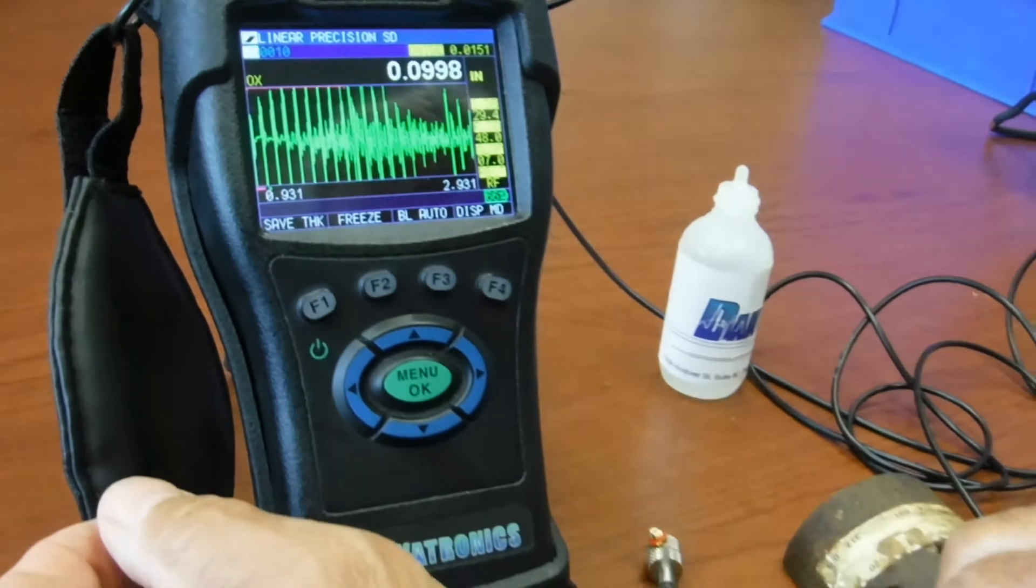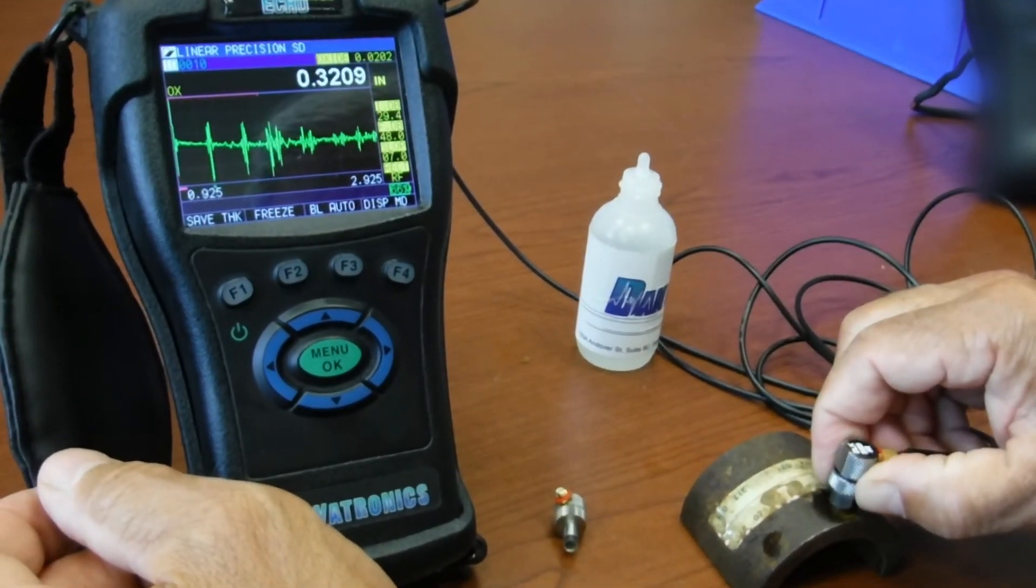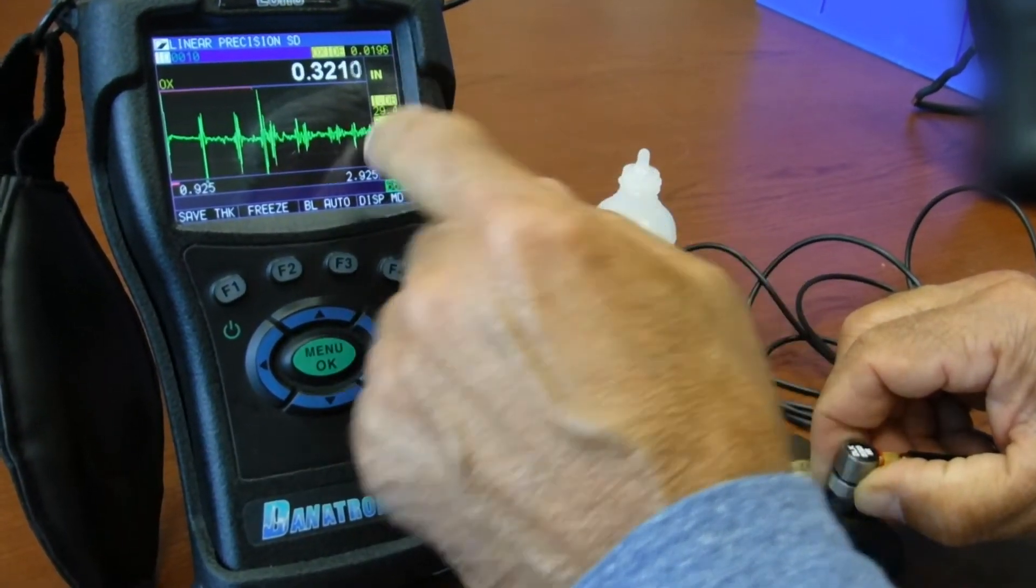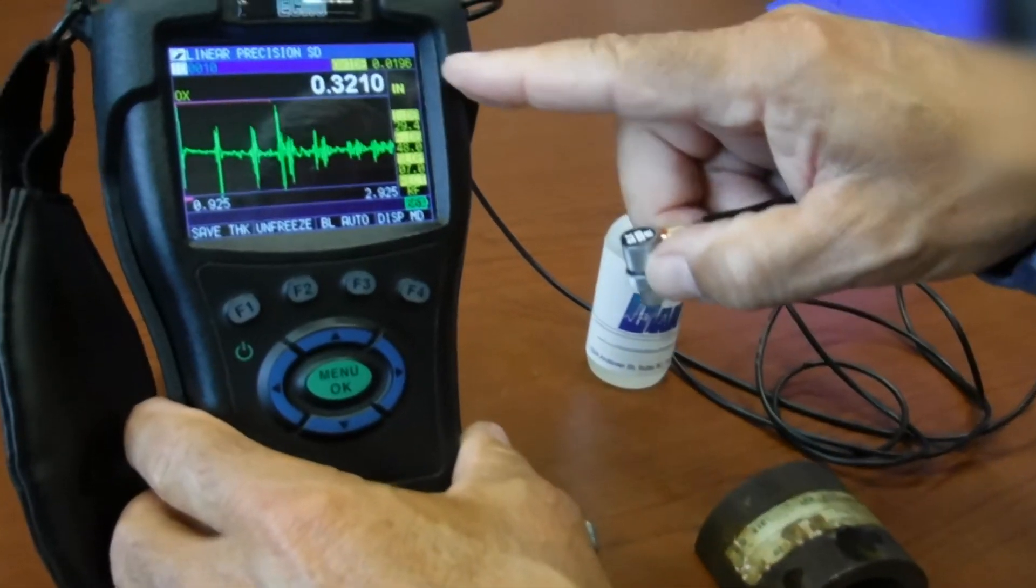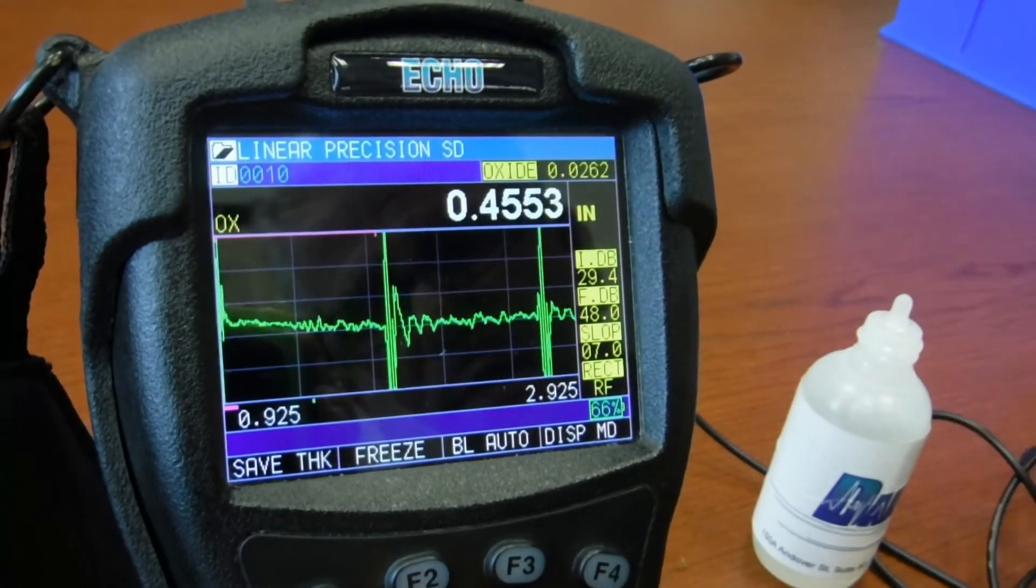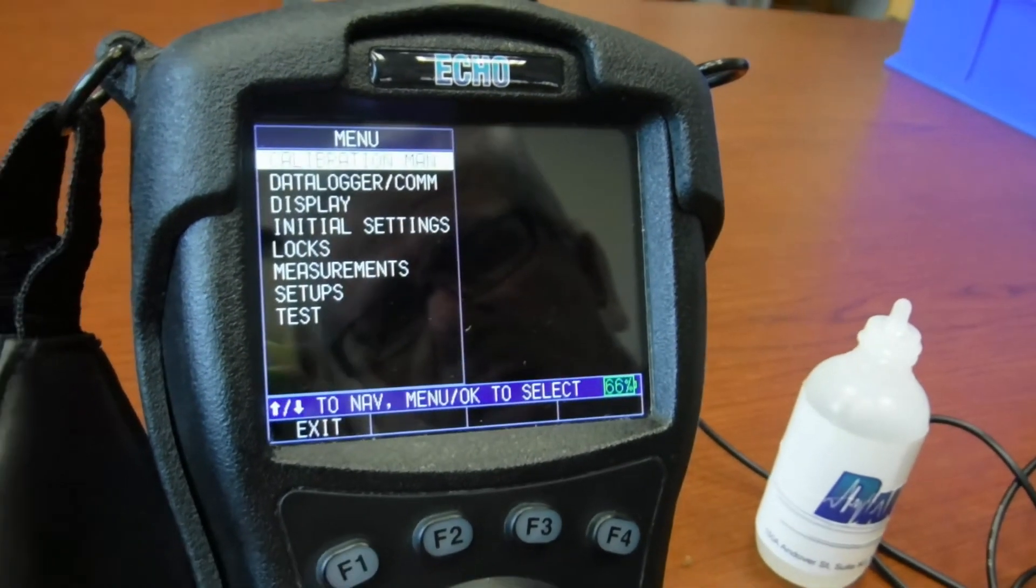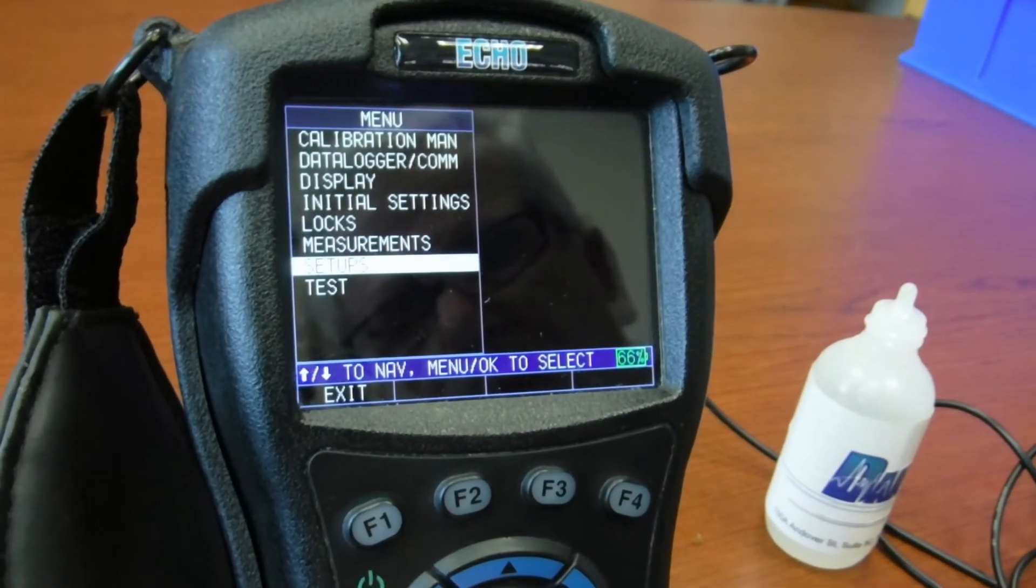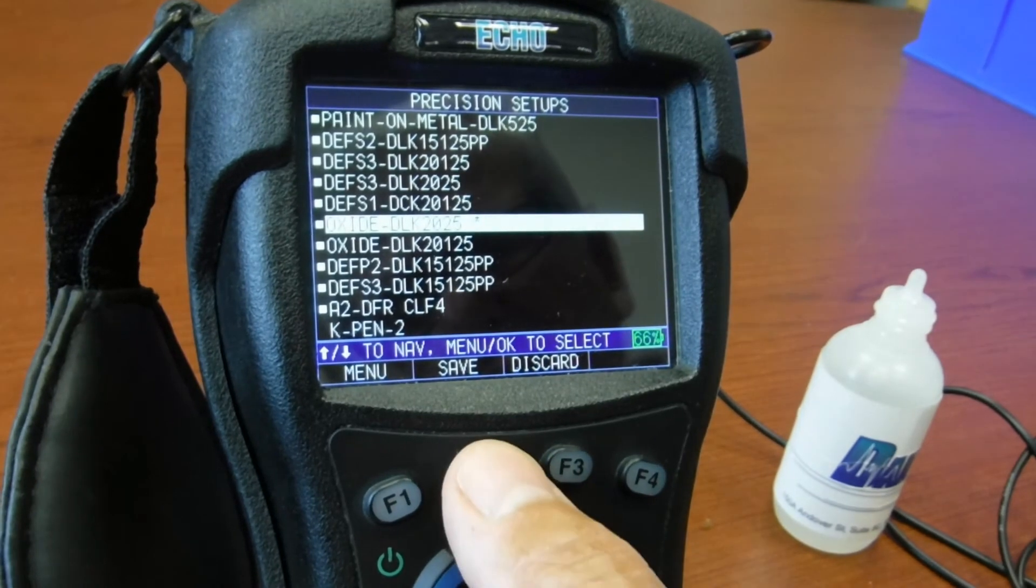At this point I'm ready to make measurements of both the tube and the oxide scale. I can freeze it so you can see the values as well. If I press unfreeze, one other thing that you can do is now go to the setup and press save and give it a name.